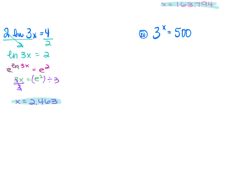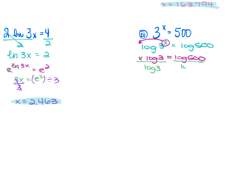For number 20: 3^x = 500. You cannot rewrite 500 as a power of 3, so take the log of both sides: log(3^x) = log(500). Bring the power down: x·log(3) = log(500). Divide both sides by log(3). Using your calculator: log(500) ÷ log(3) ≈ 5.657.